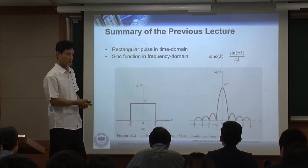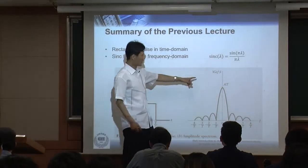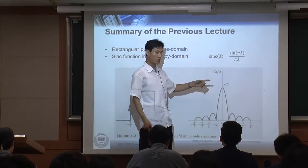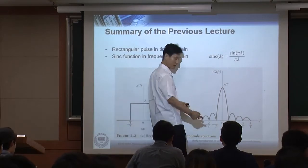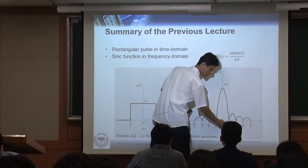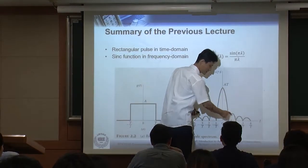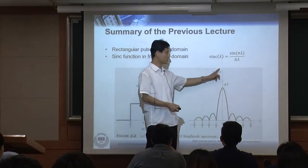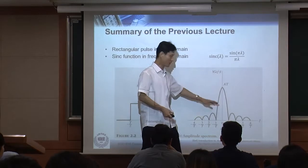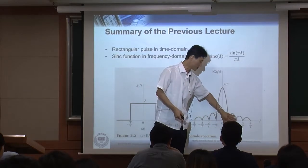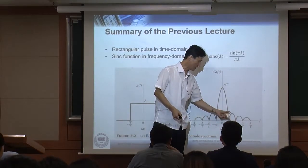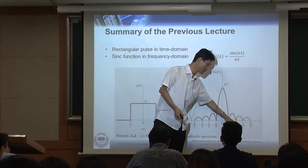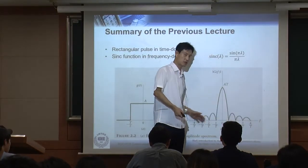We call this output the sinc function — actually this is the magnitude of the sinc function. The original sinc function goes positive, negative, positive, negative. But since this is the magnitude, we are only considering the absolute value, so all the negative values flip back up to become positive.